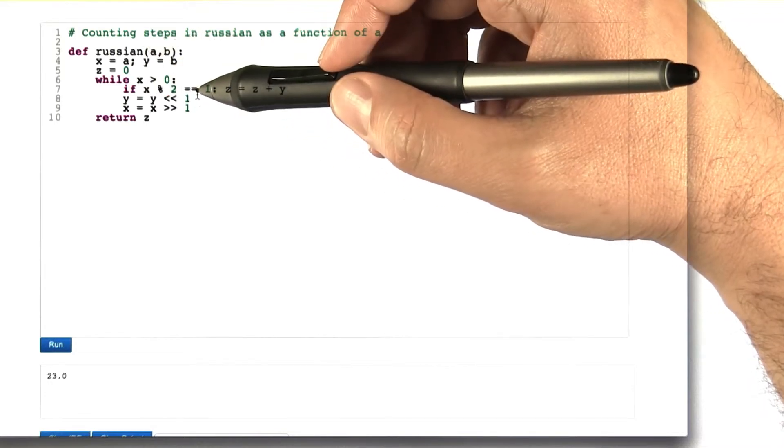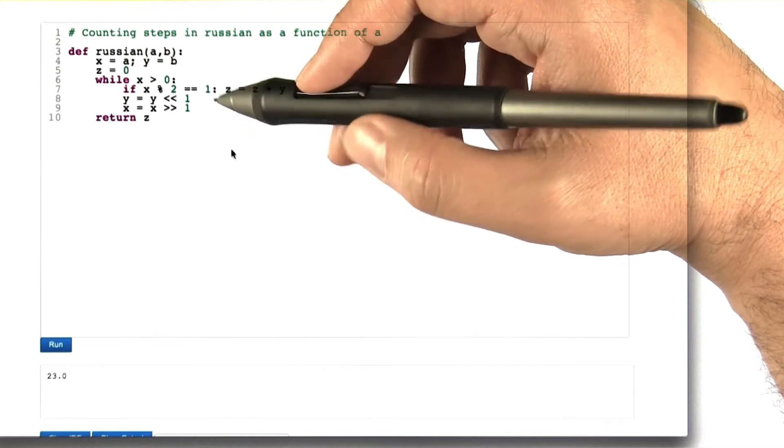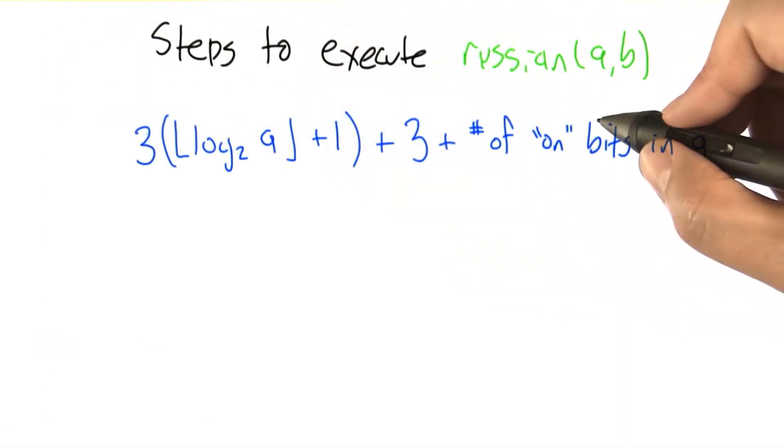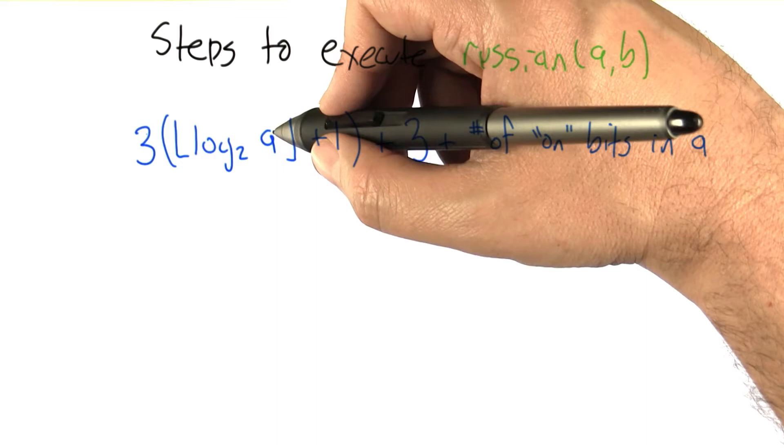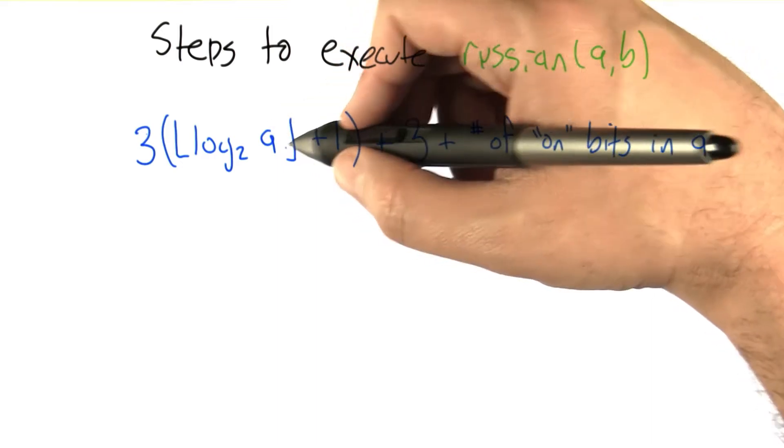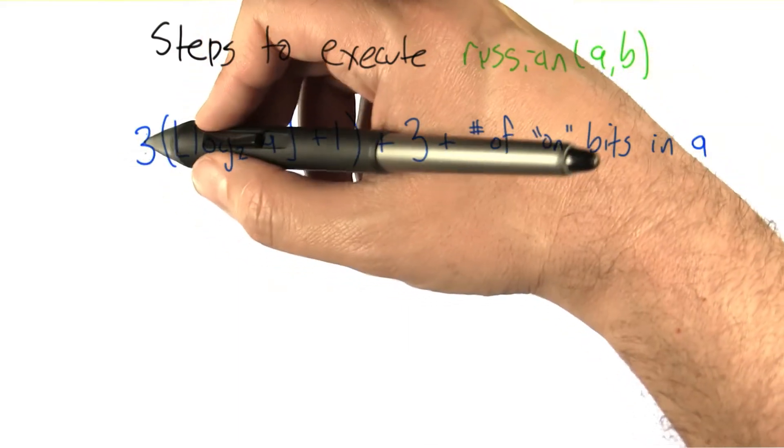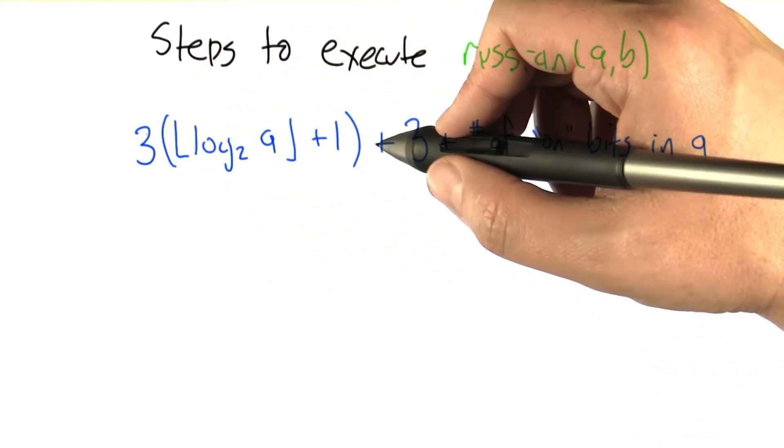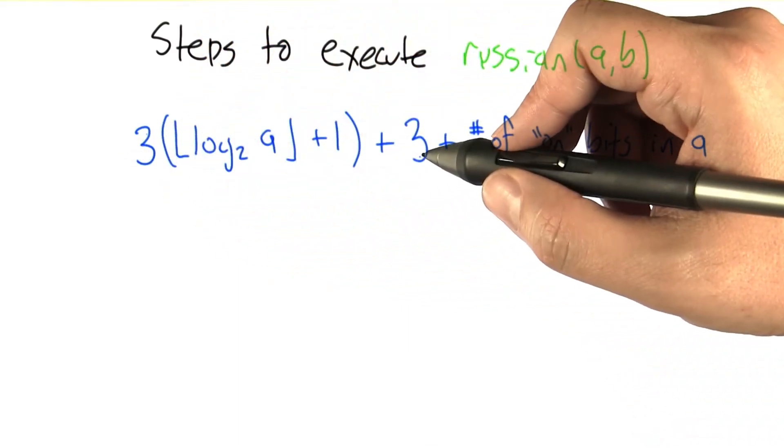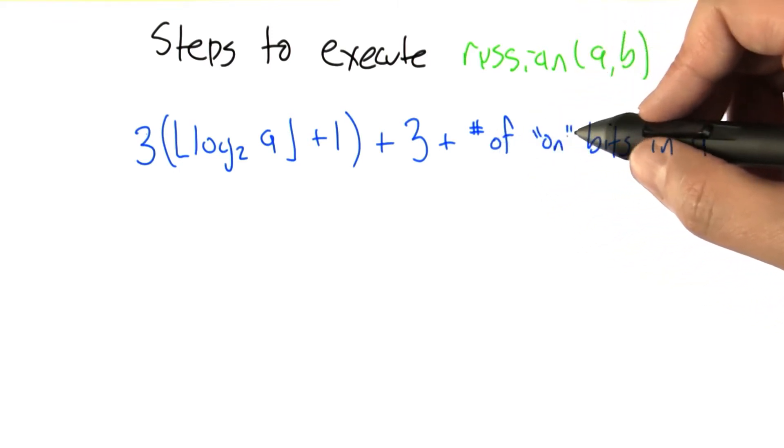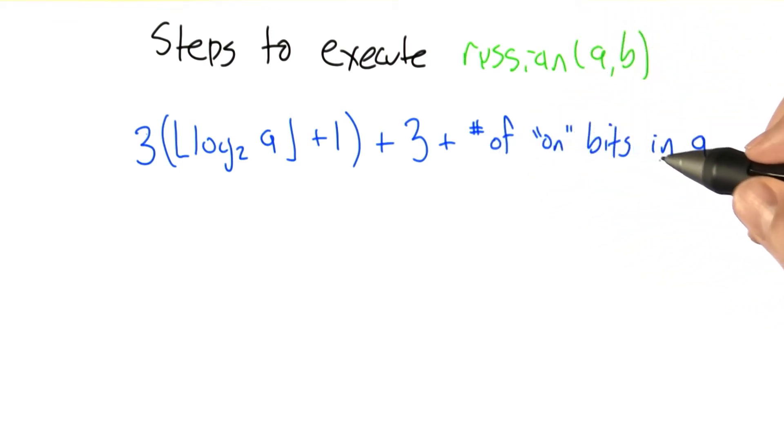So that actually is enough to get us our answer. So let me write it down. How many steps is it going to take to execute Russian ab? Well, as I said, the floor log base 2 of a rounded down plus 1 is the number of times the while loop is executed. There's three statements that are going to get executed inside plus additional three statements that are executed outside plus there's going to be one statement executed for each of the bits of a that it's on, in particular the summation. So that's kind of a mess.